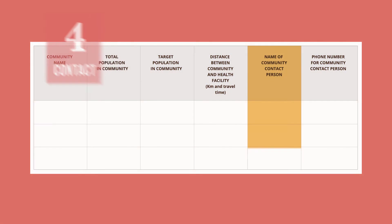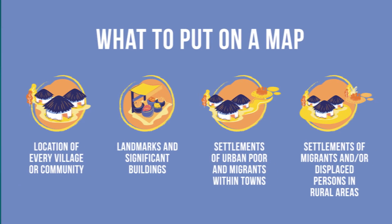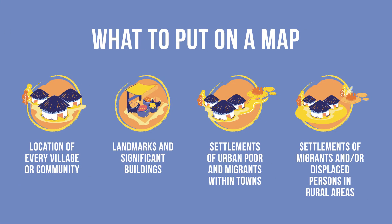What are the names of your community health workers or contact people? List them here, along with their mobile phone numbers. With a clear picture of your catchment area, you should be better able to plan and monitor vaccination services.